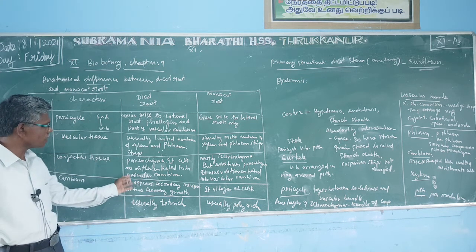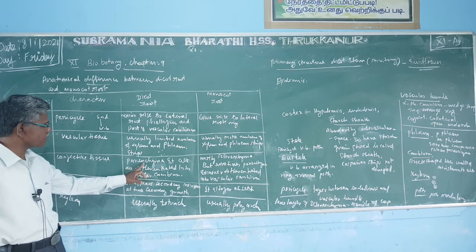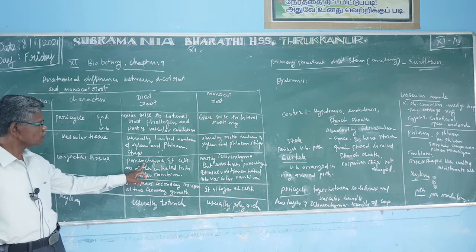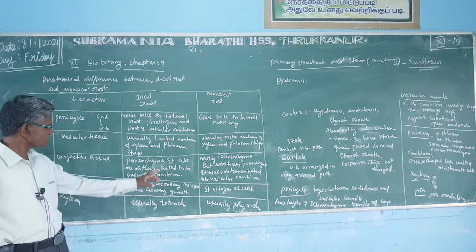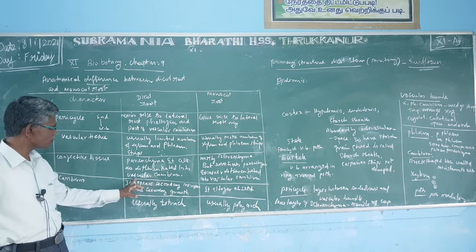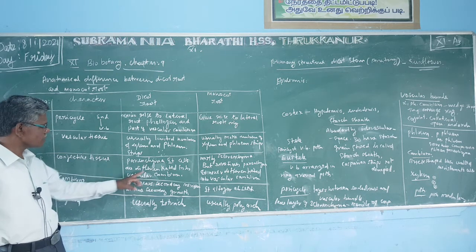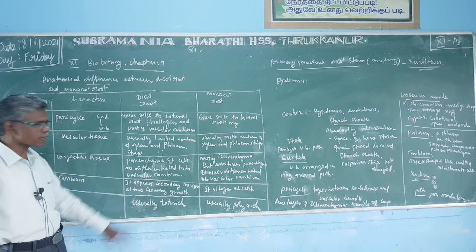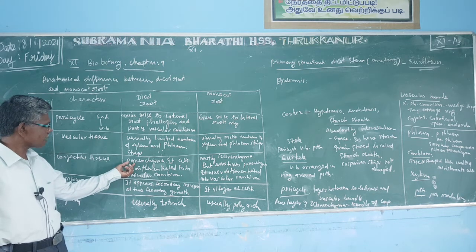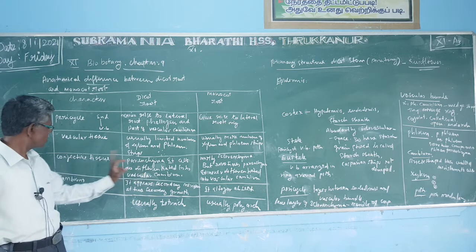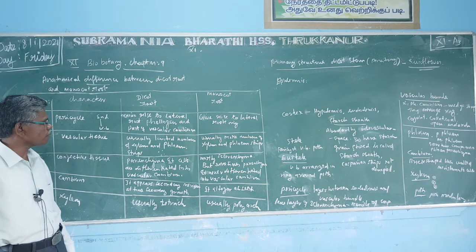The vascular bundles of xylem and phloem are connected by parenchyma cells in the dicot root. These cells are differentiated into vascular cambium. So the conjunctive tissue is differentiated into vascular cambium.